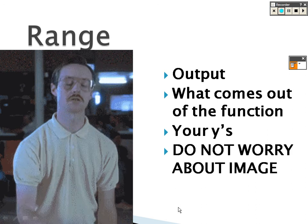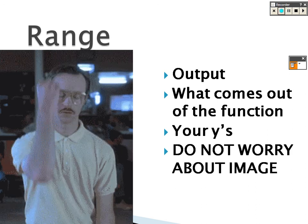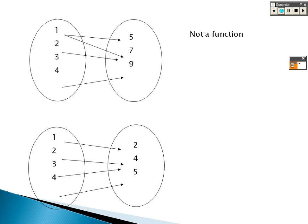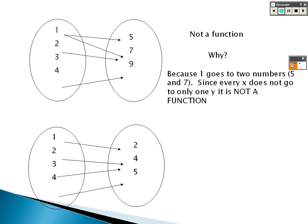This is not a function. The reason why it's not a function is because one goes to two numbers, five and seven. For every input it goes to one output, but if an input goes to two outputs, that means it's not a function. However, every input goes to one output, so that's why that one is okay.